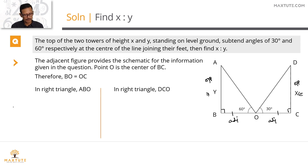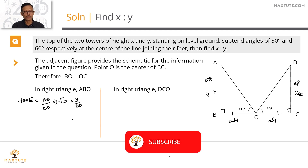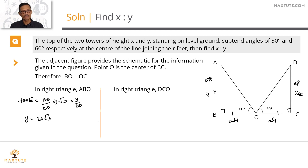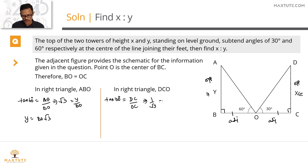In the two right triangles ABO and DCO, we know opposite and adjacent sides for both angles, so we use tan. In triangle ABO: tan 60° = AB/BO = y/BO. Since tan 60° = √3, we get y = √3 · BO. In triangle DCO: tan 30° = DC/OC = x/BO. Since tan 30° = 1/√3, we get x = (1/√3) · BO.